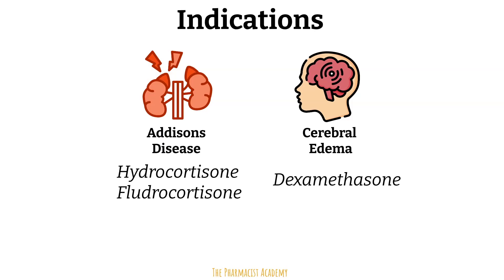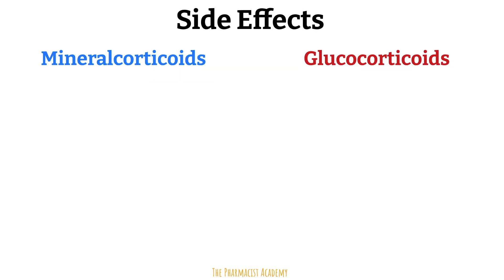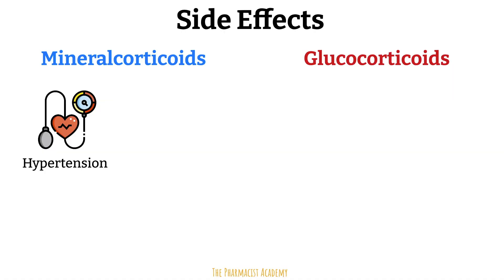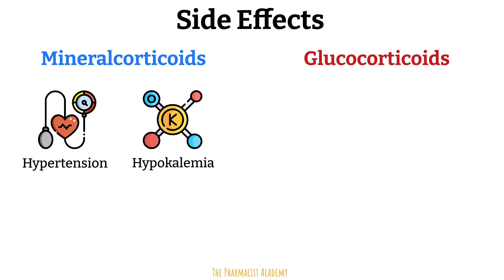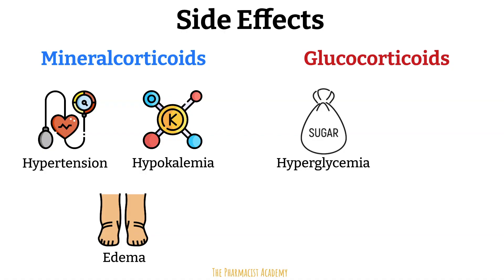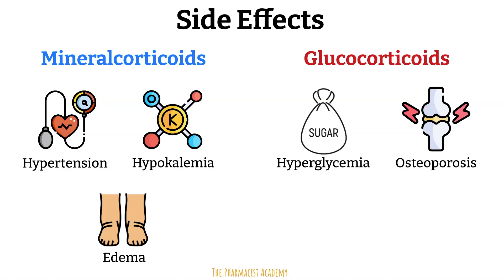Let's discuss some side effects of mineralocorticoids and glucocorticoids. For mineralocorticoids, patients can develop hypertension due to sodium and water retention, hypokalemia from potassium excretion, and peripheral edema due to sodium and water retention. Side effects of glucocorticoids include hyperglycemia due to gluconeogenesis, and osteoporosis due to inhibition of osteoblasts — reducing new bone matrix production — and increased osteoclast activity leading to increased bone breakdown.